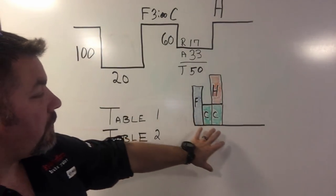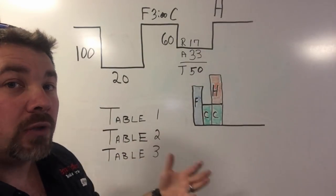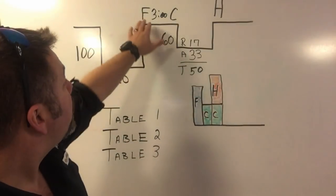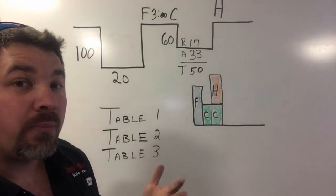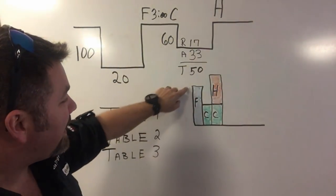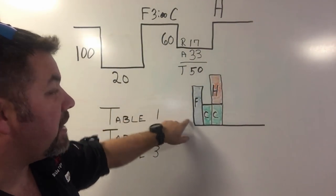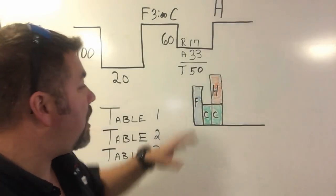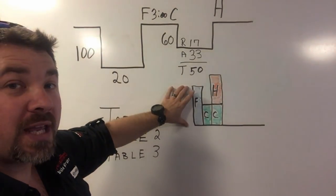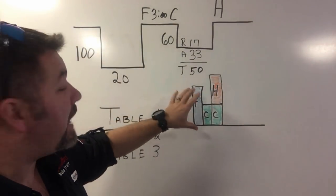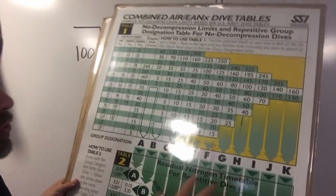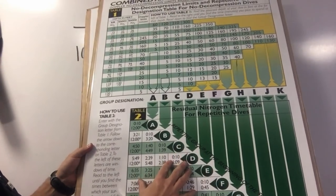I drew a little colored graph here to represent that nitrogen. The F that we are calling a pressure group is represented by this blue area here — that's how much nitrogen I just stored into my body. At the end of the dive, that blue area is how much nitrogen is actually in my body.